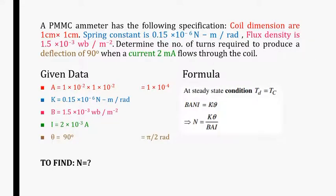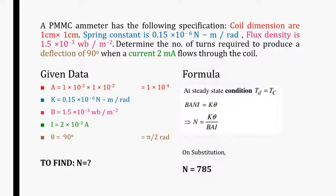From this, on cross multiplying, we can find the value of N. On direct substitution of all the known parameters, N is equal to 785. That is, 785 turns in the moving coil will produce a deflection of 90 degrees when 2 milliampere current flows through the coil.